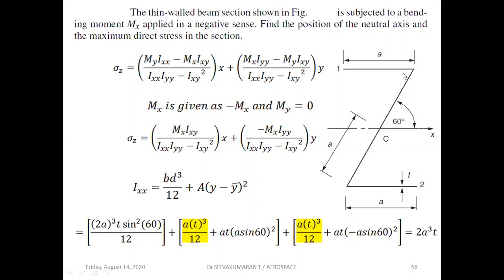For the inclined thin-walled section, the overall centroidal axis passes through the inclined section's centroid, so we can directly use the formula: a³t·sin²β/12. Here, the length is 2a, so it becomes (2a)³ · t · sin²β, where β is 60 degrees, divided by 12. This is for the inclined portion.